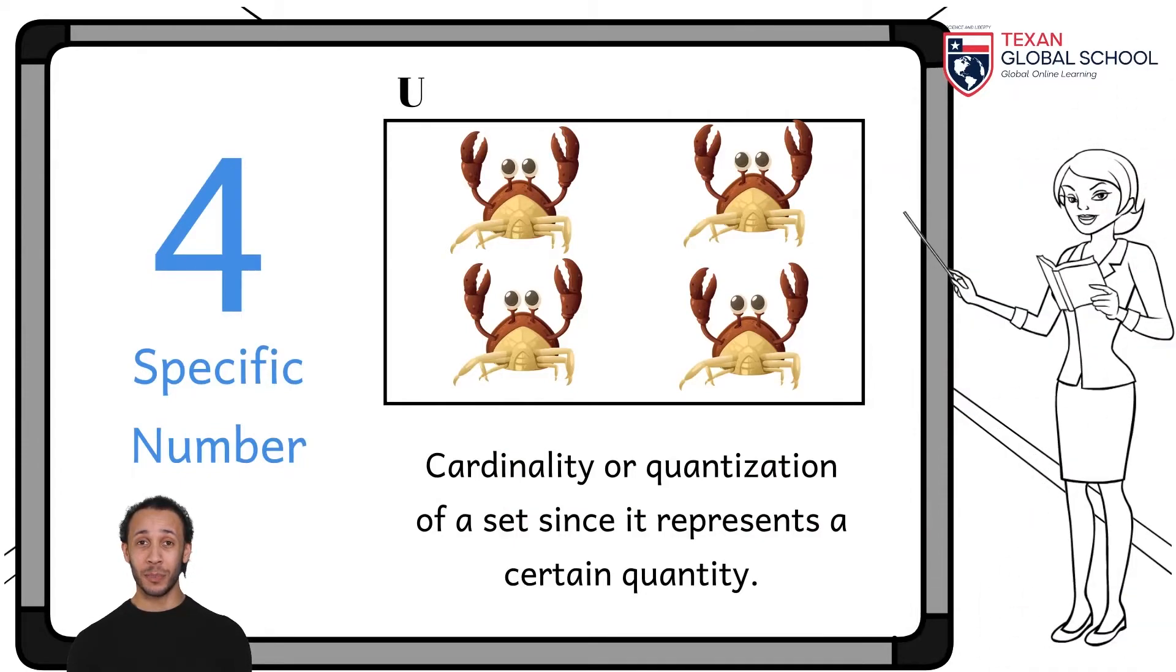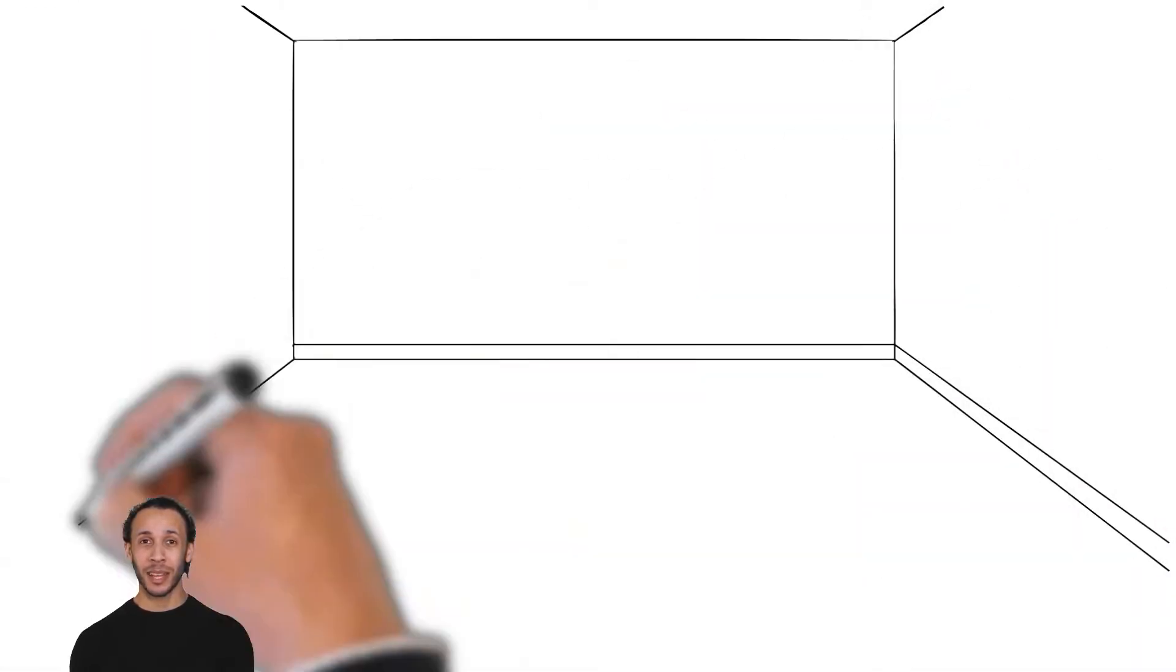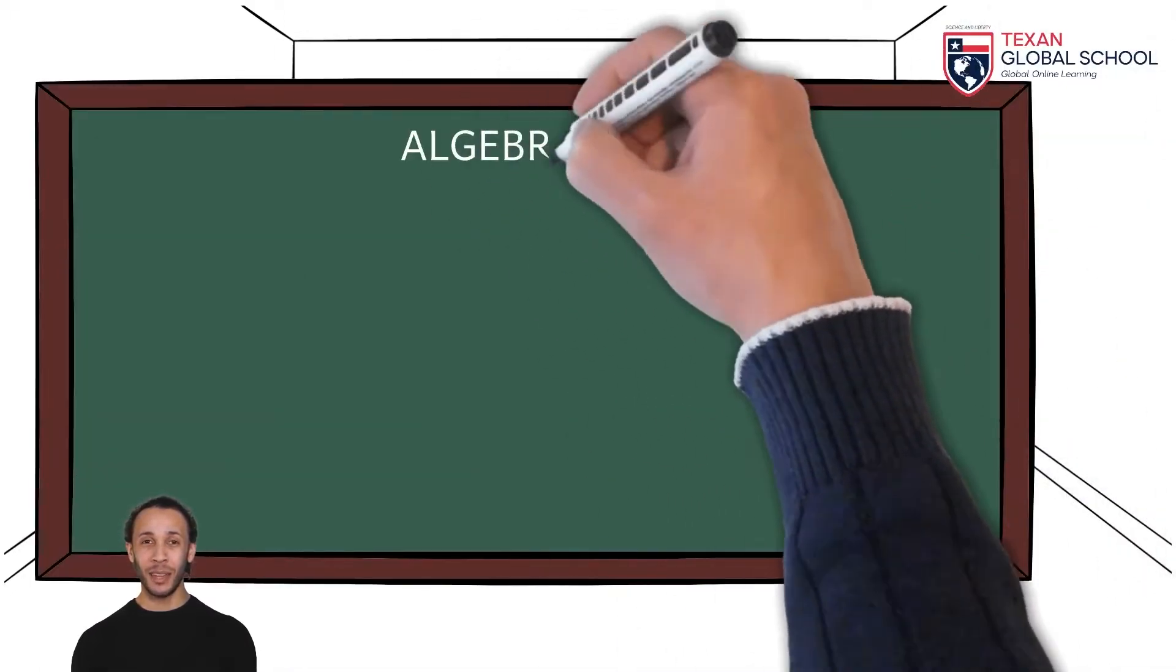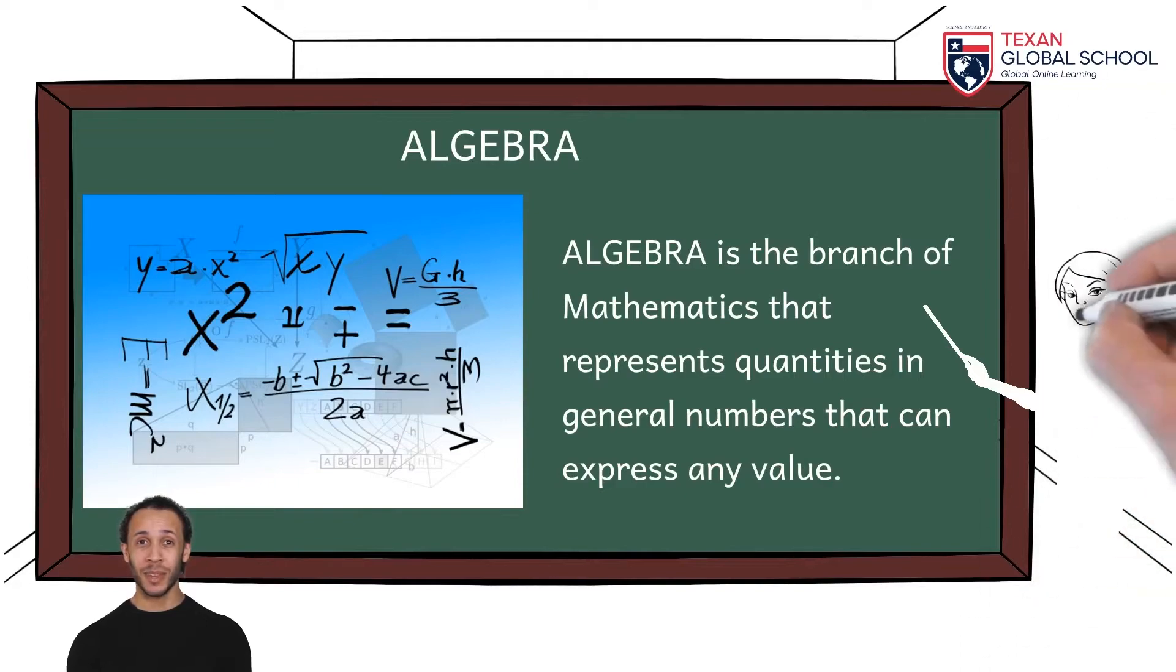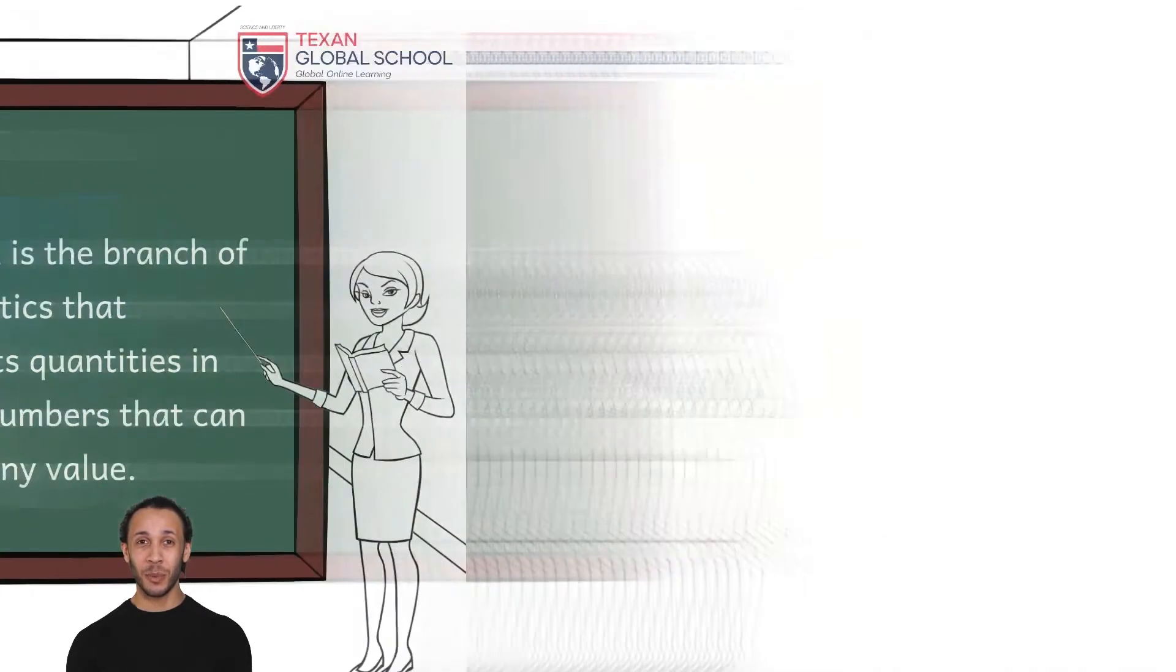On the other hand, algebra is the branch of mathematics representing quantities in general numbers that can express any value. In this case, general numbers are also called variables or literals and are represented by any letter.